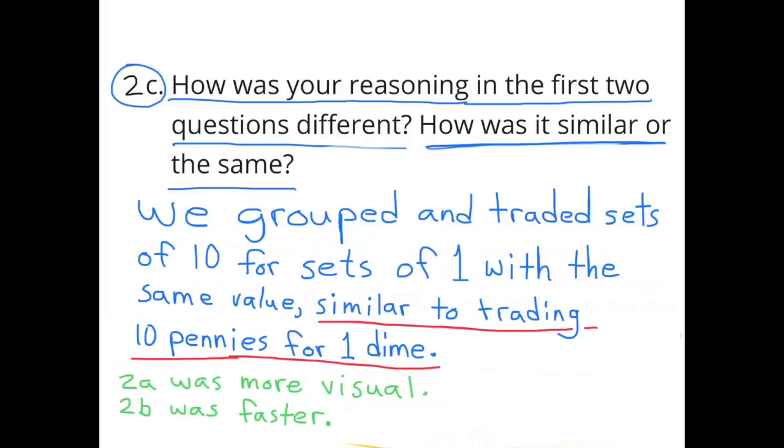C. How was your reasoning in the first two questions different? How was it similar or the same? In both situations, we grouped and traded sets of 10 for sets of 1 with the same value, similar to trading 10 pennies for 1 dime. 2A was more visual and 2B was faster.